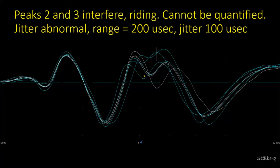Here is another situation where we trigger here with some baseline fluctuation, and the riding is very severe. The first, second, and third peaks are visible. The earliest and latest position of the third signal show a range of about 200 microseconds, which corresponds to a jitter of about 100 microseconds — definitely abnormal.